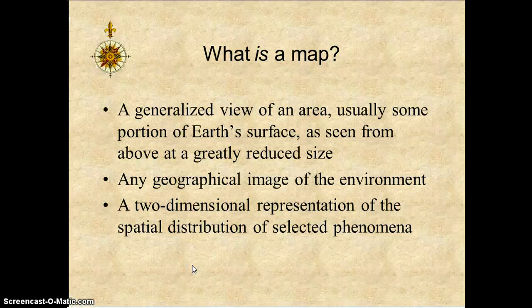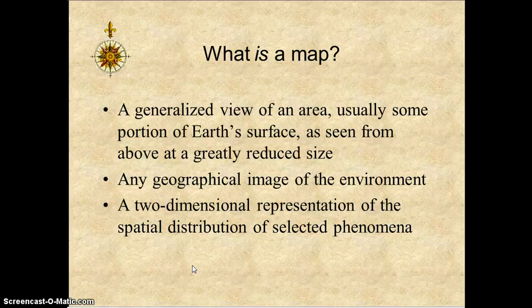What is a map? A map is a generalized view of an area, usually some portion of the Earth's surface, as seen from above at a greatly reduced size. Maps can be seen in many different ways, especially when using Google Maps today.